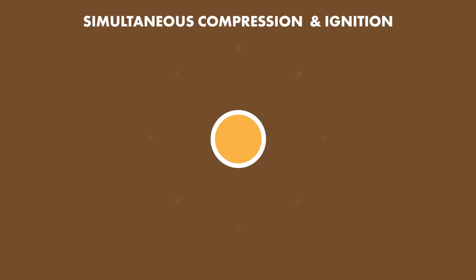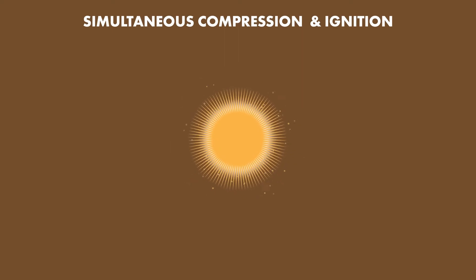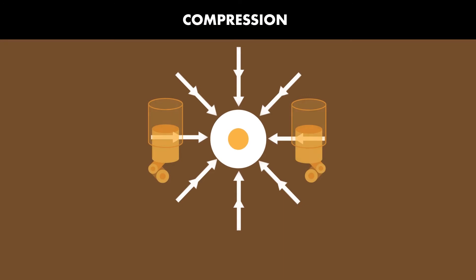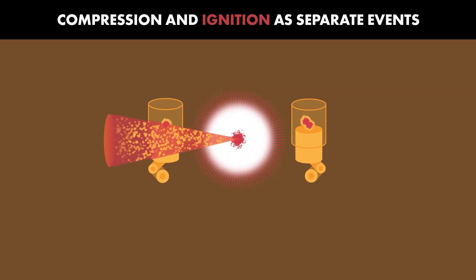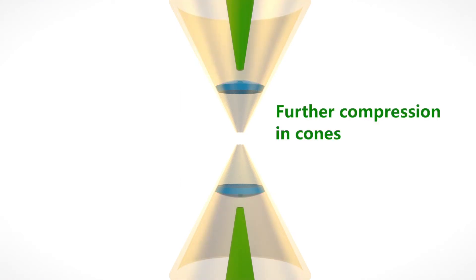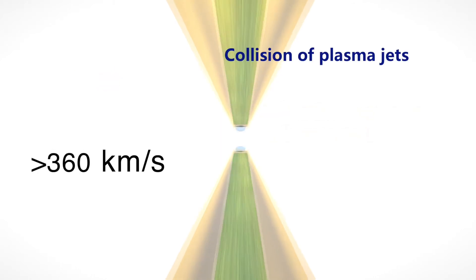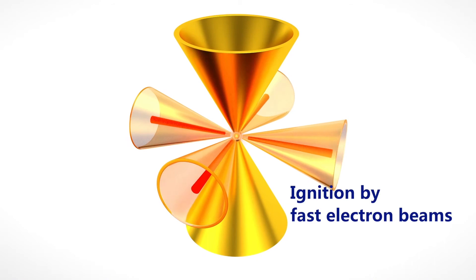Traditionally, ICF has used lasers to compress and ignite fuel at the same time, a process prone to instability. A more efficient way, called fast ignition, separates the fuel compression and ignition, allowing optimisation of these two processes independently while avoiding instabilities. However, fast ignition faces challenges in precisely injecting the heating electron beam to the right position at the right time in very dense plasmas. Zhang and his team developed a new approach: reaching fusion density through collision from two cones where fuel shells are compressed, then using ultra-short pulsed high-energy electron beams to heat the colliding plasma to ignition temperature, aiming at a more efficient fusion process.